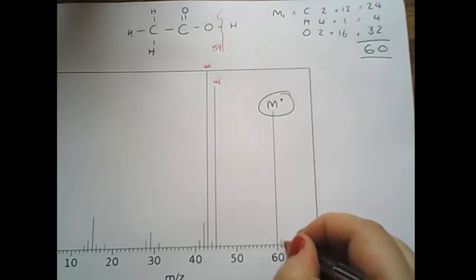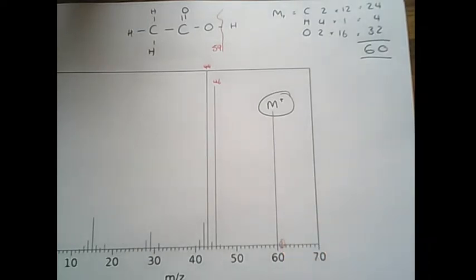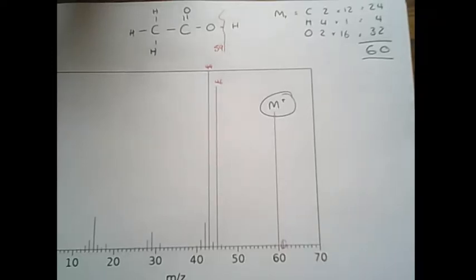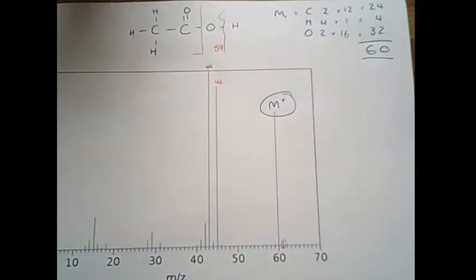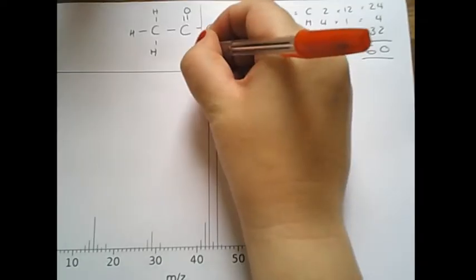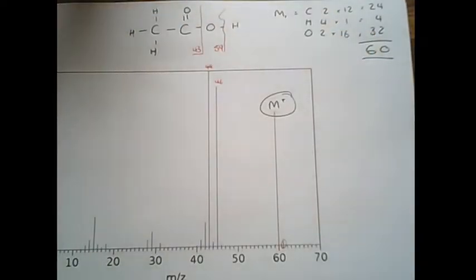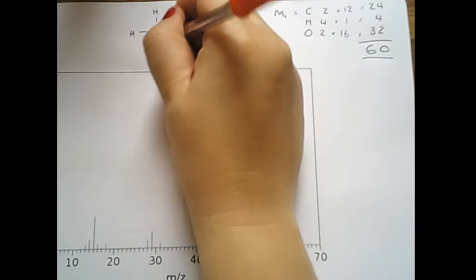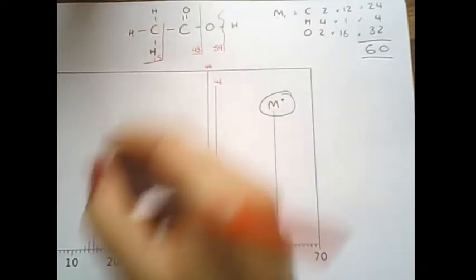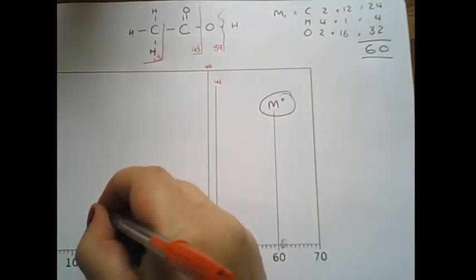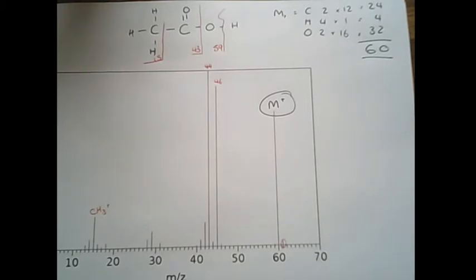They have given us a little peak slightly above that at 61. Again, that's just probably the presence of an isotope, carbon 14, for example. What else have we got? Let's keep chopping off a bit. So, 59 minus the 16 from the oxygen, that's going to be 43. Over here, we've got another 15. So 15 is there. So that's just a CH3 plus.